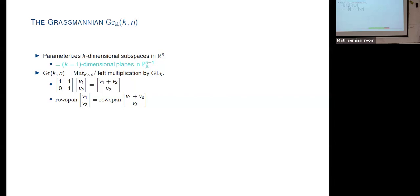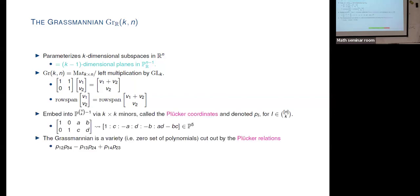If I put the basis of my vector space into a matrix, it makes a k-by-n matrix — that's a representative for my subspace. But this isn't unique because we can change our basis, so we need to quotient out by left multiplication. We can also think about it as a projective variety by embedding it into (n choose k − 1)-dimensional projective space through its k-by-k minors, which are called the Plücker coordinates.